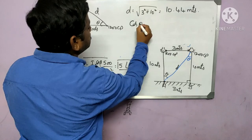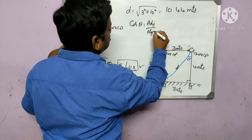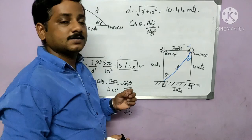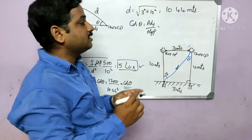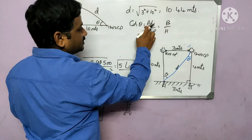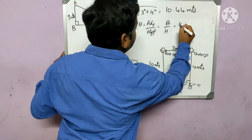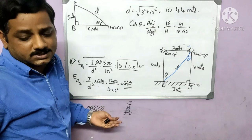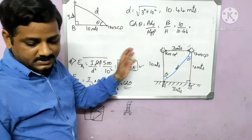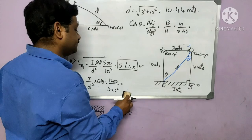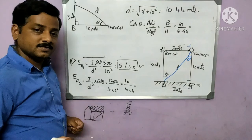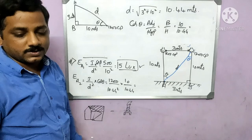Now find cos θ. Using the mnemonic CAH (cos = adjacent / hypotenuse), the adjacent side is the vertical height of 10 meters and the hypotenuse is d = 10.44 meters. So cos θ = 10 / 10.44 ≈ 0.957. Substituting into the formula: EA2 = 1200 / (10.44²) × (10 / 10.44), which gives approximately 10.546 lux.